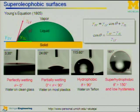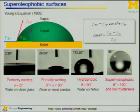Rearranged, this is cosine theta equals gamma SV minus gamma SL over gamma LV, where theta is Young's contact angle — the contact angle of a certain fluid on a certain substrate that is flat.